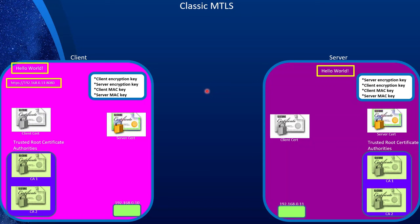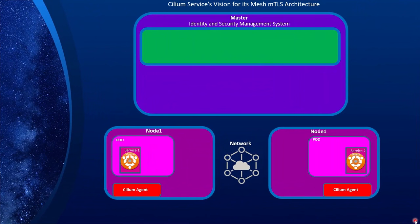This is an overview of how classic MTLS works. The key point is that MTLS provides both encryption and mutual authentication together — you cannot opt out of either feature.